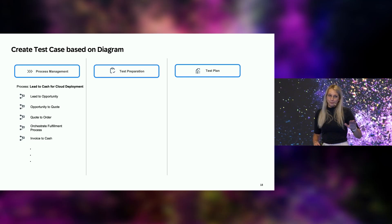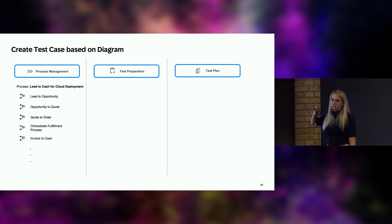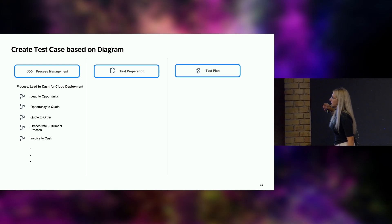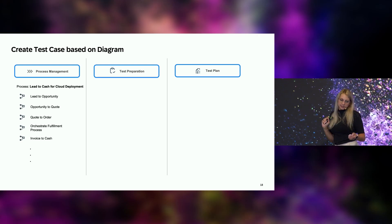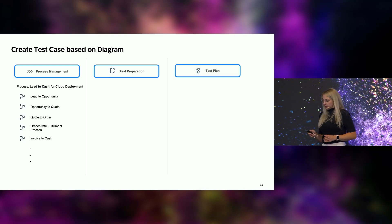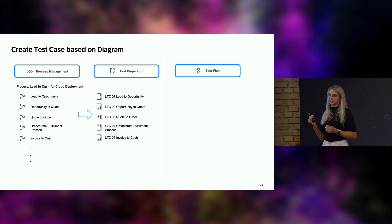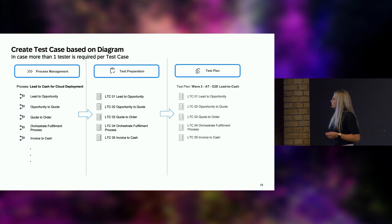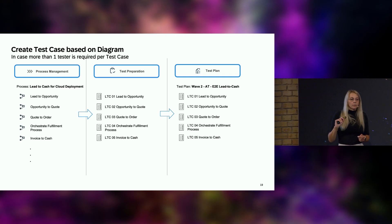Rainer will show you a great demo afterwards. Starting inside of process management, for one end-to-end process — like Lead-to-Cash — we have several diagrams available. Out of the diagrams we create for each diagram an own test case inside the test preparation app. When done, we take those test cases into our test plan, which could be something like a Lead-to-Cash test plan, and then assign testers to it.